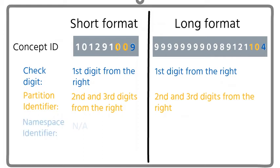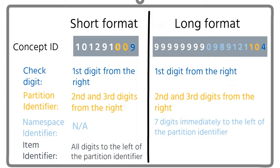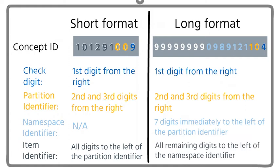The namespace identifier for the short format is not applicable. For the long format, it is seven digits immediately to the left of the partition identifier. The item identifier is all digits to the left of the partition identifier for the short format, and all remaining digits to the left of the namespace identifier for the long format.